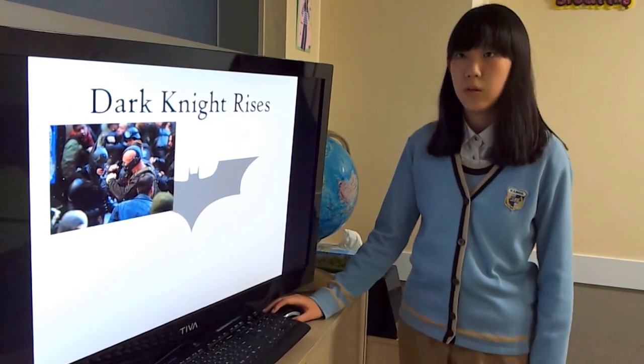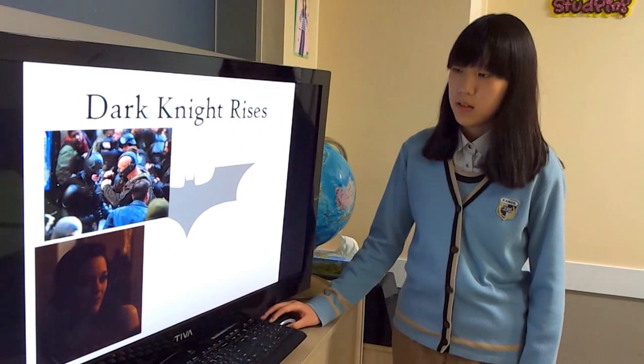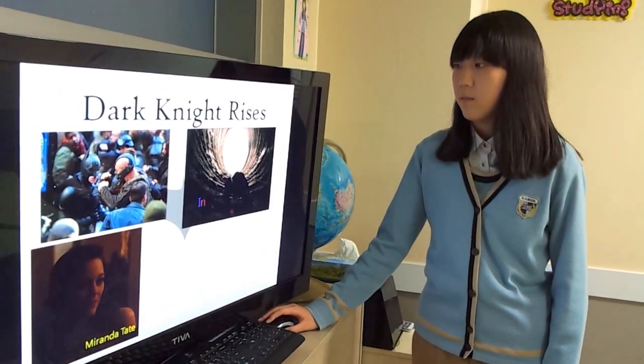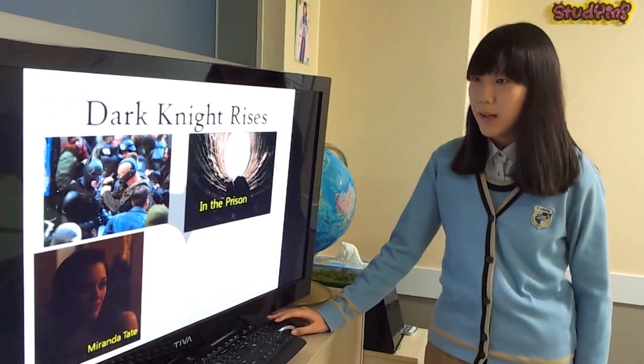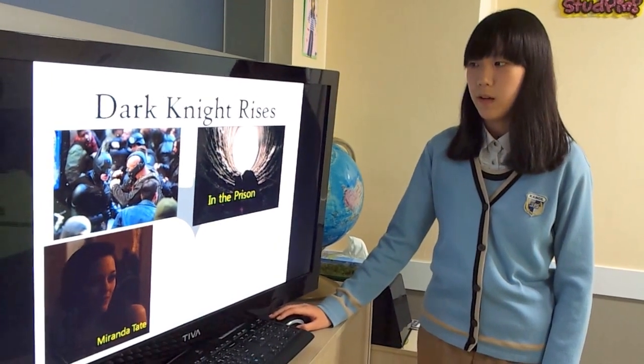Bane tried to destroy Gotham City with bombs. At the same time, Batman fell in love with Miranda Tate. Bane put Batman in prison, but Batman escaped.